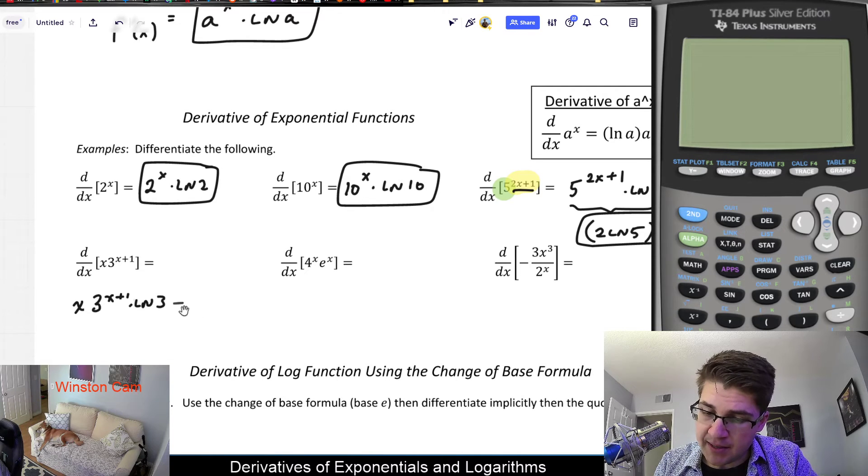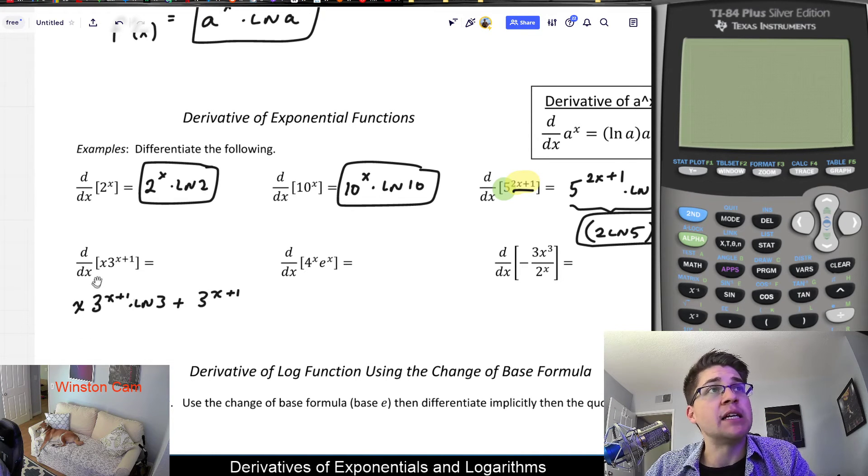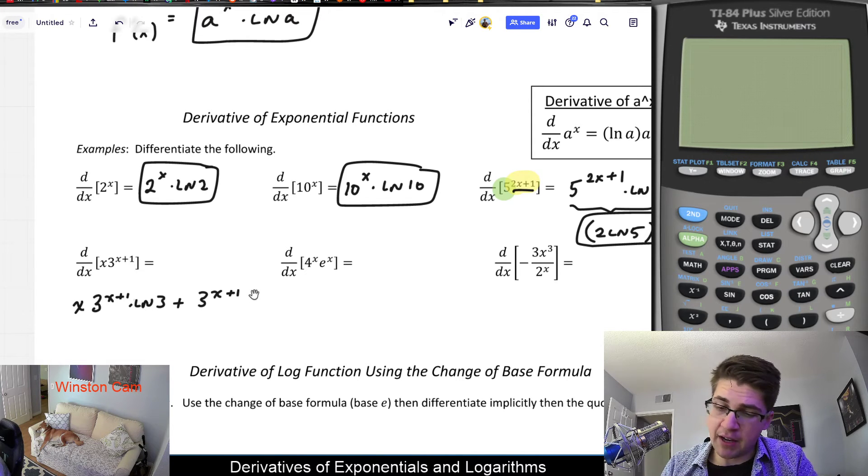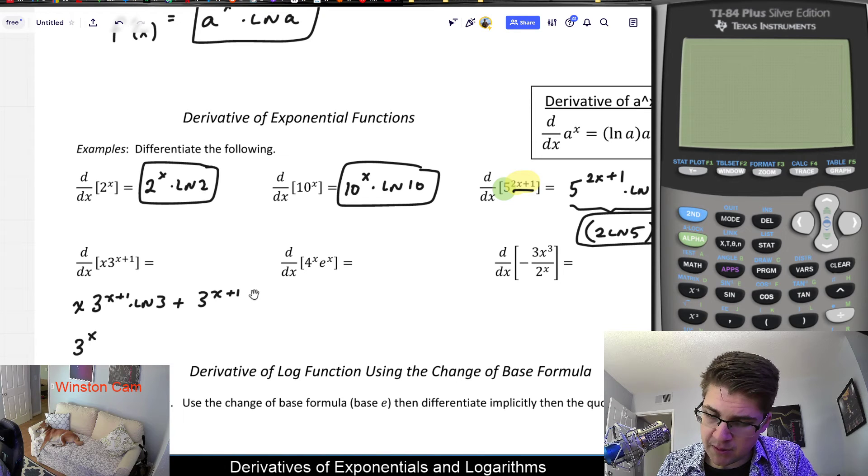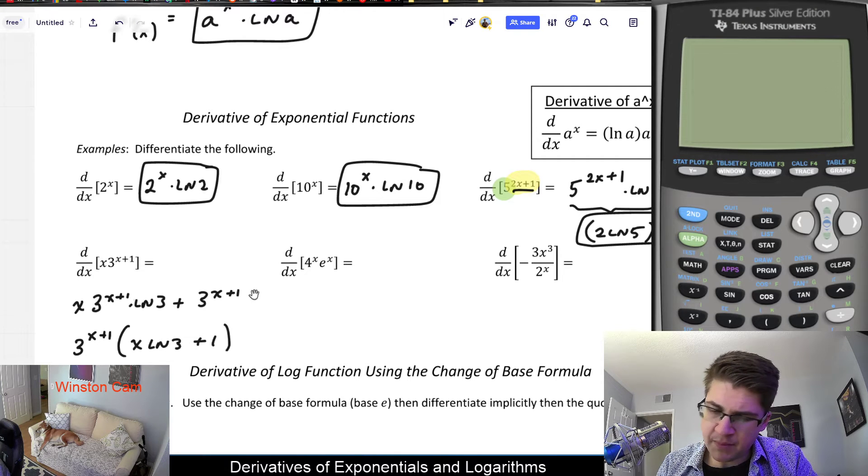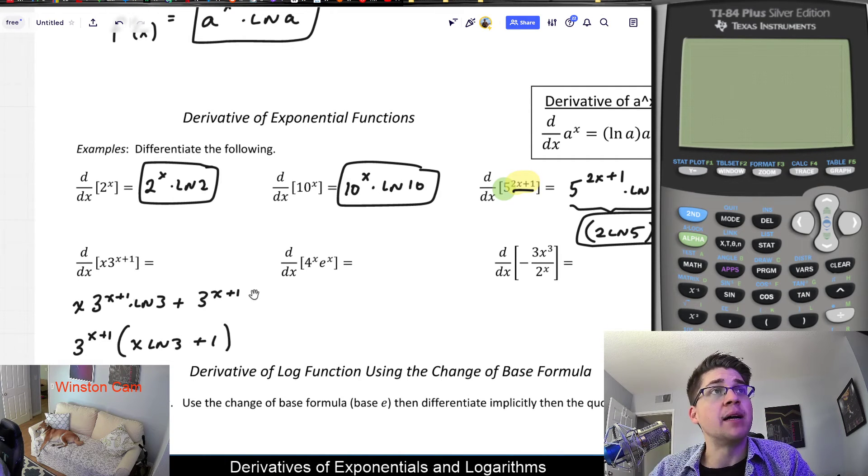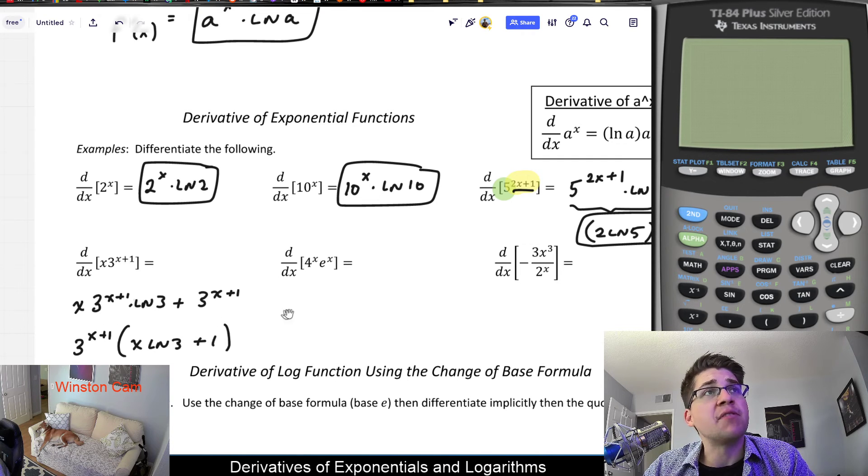And then we need to do plus second d first. And d first is just going to be derivative of x is just 1. So I would end up with 3 to the x plus 1 as a common factor here. I could even factor this out. 3 to the x plus 1 is common. And that would leave me with x ln 3 plus 1. Or however you want to write it. But we get a common factor in our derivative there.